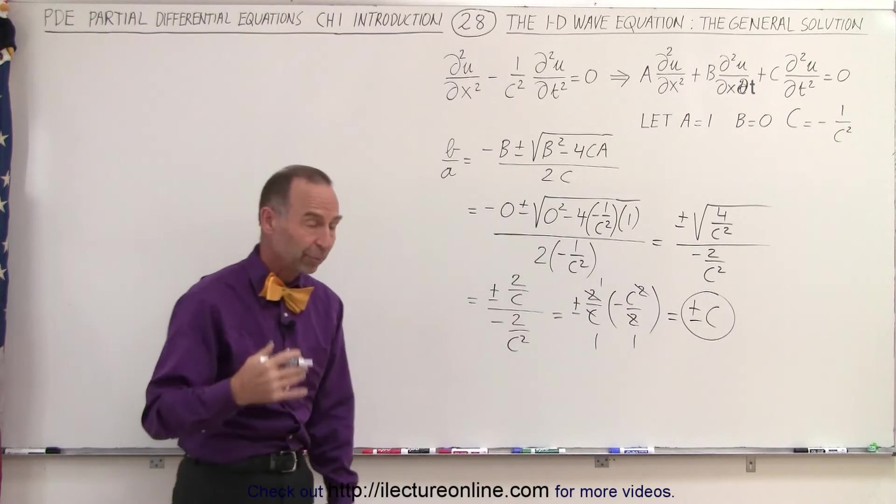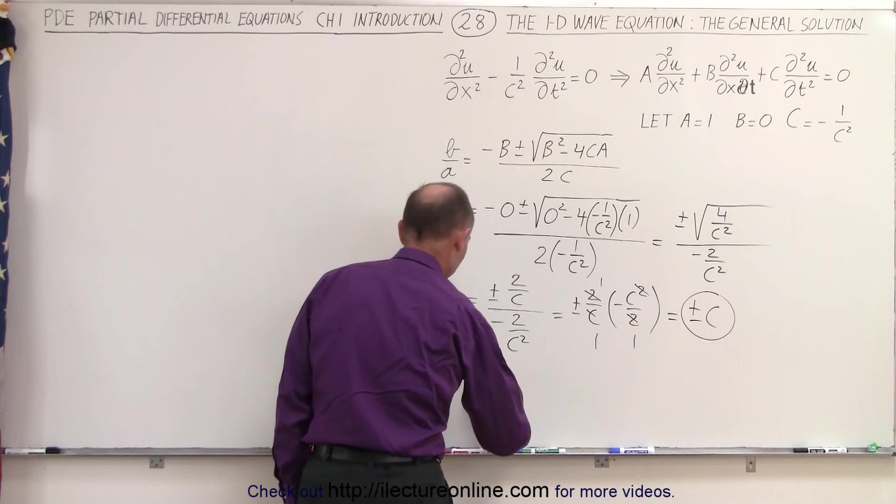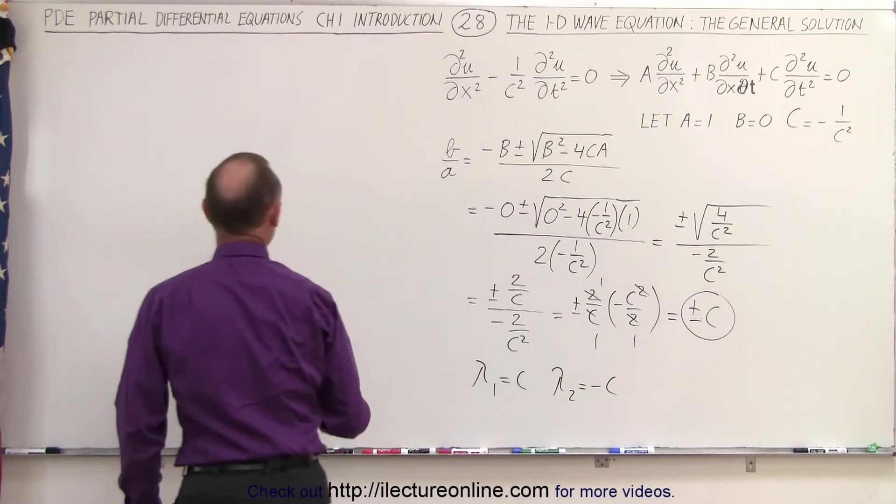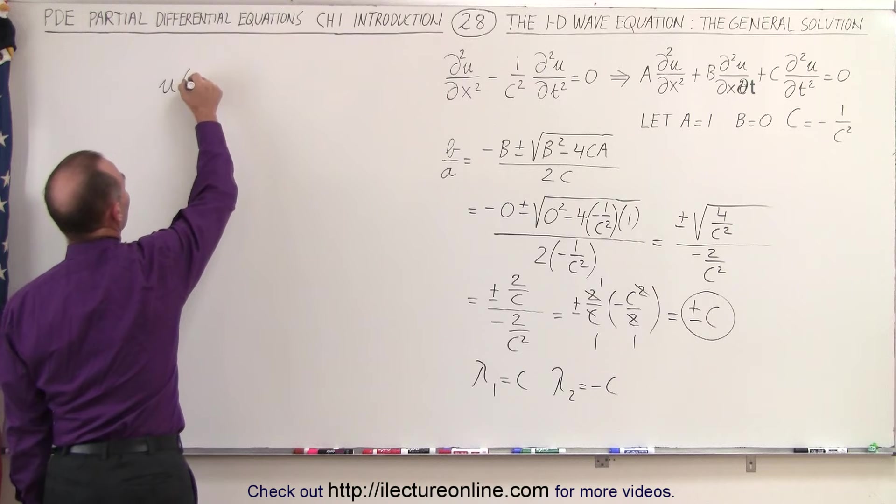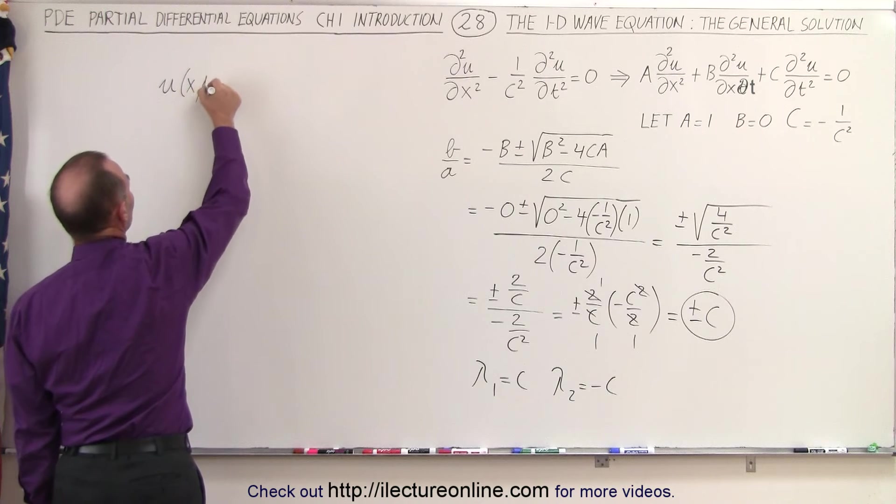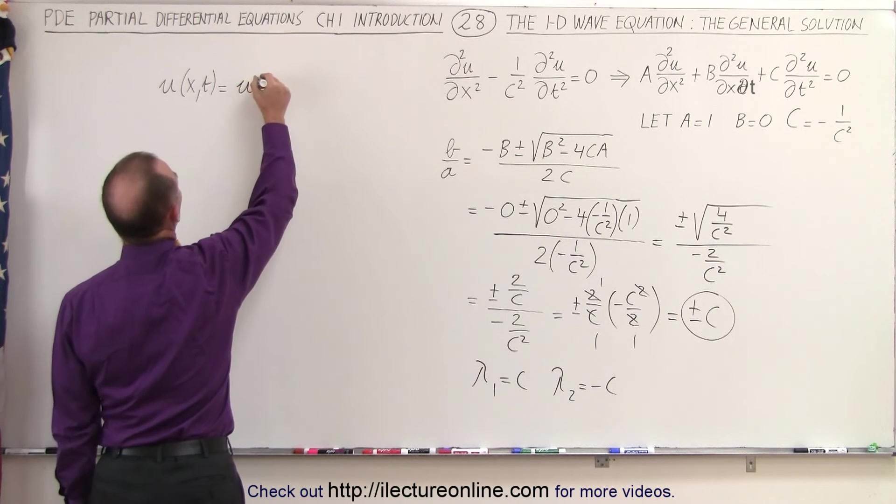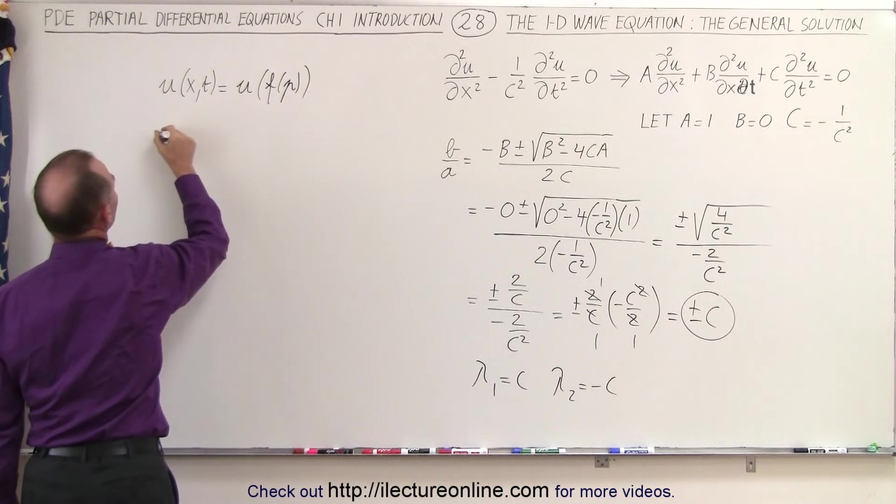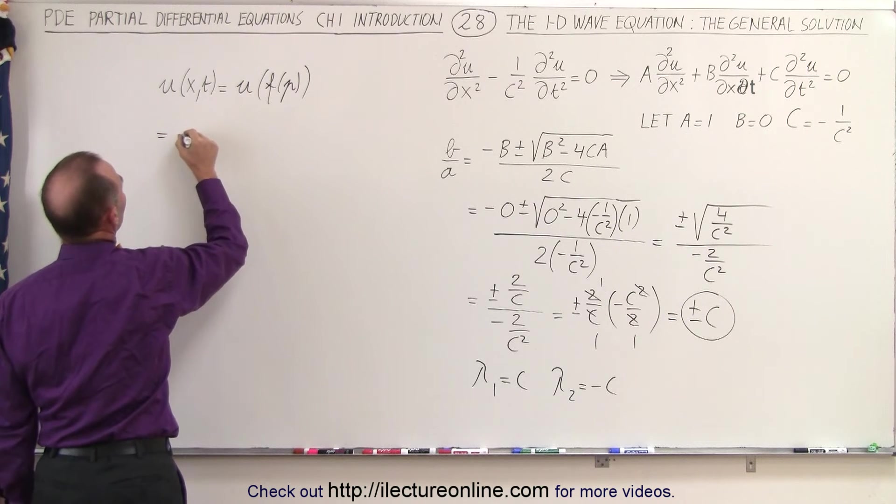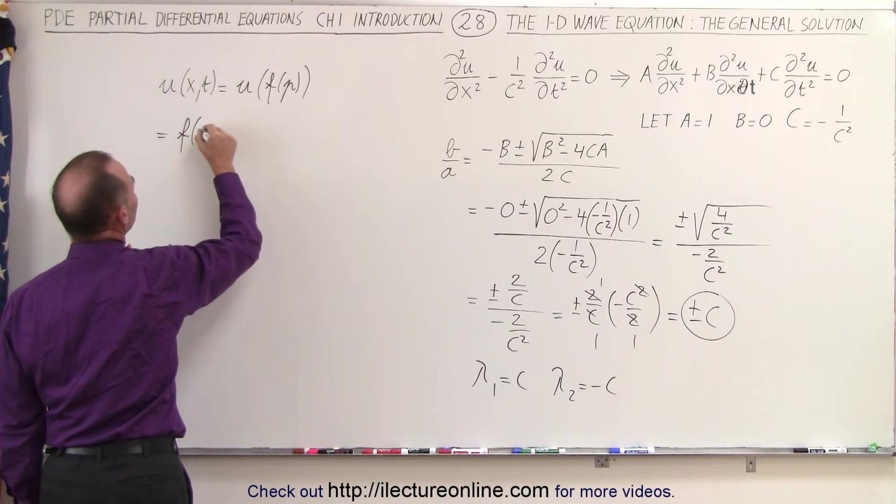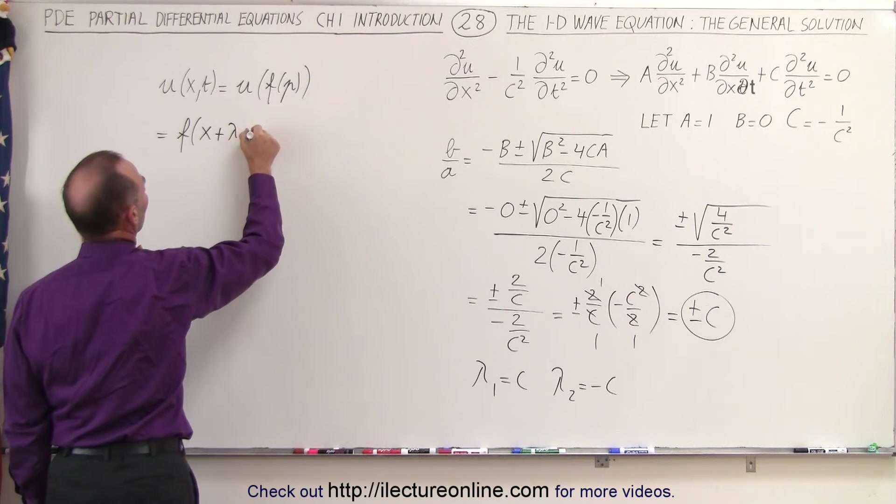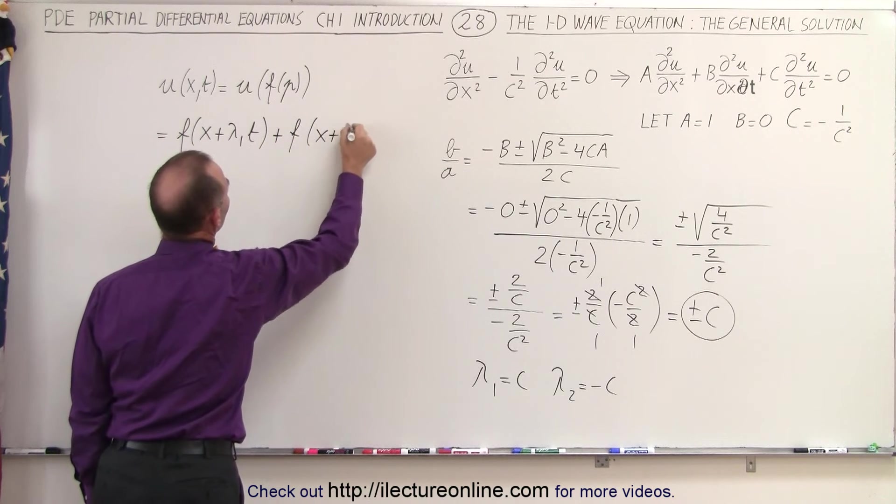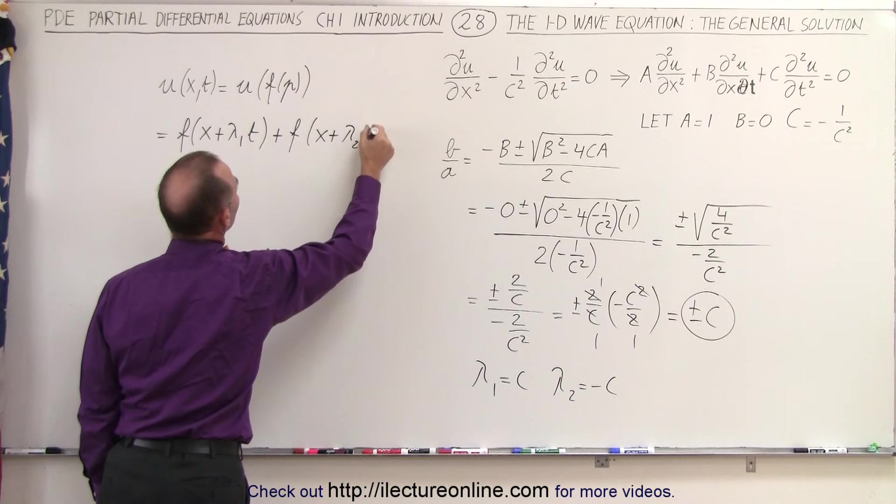We're going to express our solution in terms of lambda 1 is equal to plus c, and lambda 2 is equal to minus c, and then realize that the general solution of the equation, u of x and t, is equal to a linear function. That would be equal to f of x plus lambda 1 t in this case, and plus f of x plus lambda 2 of t.